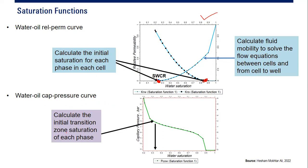Using the relative permeability curve and capillary pressure curve, we calculate the initial saturation for each phase in each cell. Data such as relative permeability, critical saturation, connate water saturation, and capillary pressure are all required for initialization — to determine the initial saturation of each phase in every grid cell, to calculate fluid mobility, to solve the flow equation, and to compute saturation in the transition zone.